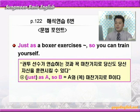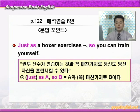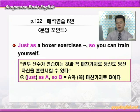바로 문법 포인트로 갑니다. 'Just as a boxer exercises, so you can train yourself' — 권투선수가 연습하는 것과 꼭 마찬가지로 당신도 당신 자신을 훈련시킬 수 있다. 본문을 해석하면서 이미 설명을 드렸습니다. 'just as A, so B' 하면 'A와 꼭 마찬가지로 B다' 이런 뜻이라고 그랬죠. 여기 just는 꼭 혹은 바로 이런 의미로 강조를 위한 것이니까 생략할 수 있다 그랬습니다. 그런데 'as A, so B' 이런 구문은 고어투, 즉 옛날 말투니까 현대 영어에서는 점차 쓰이지 않습니다. 하지만 속담이나 옛날에 유명한 분들의 글에는 이런 표현들이 나오니까 반드시 이 구문을 알아둬야겠습니다.